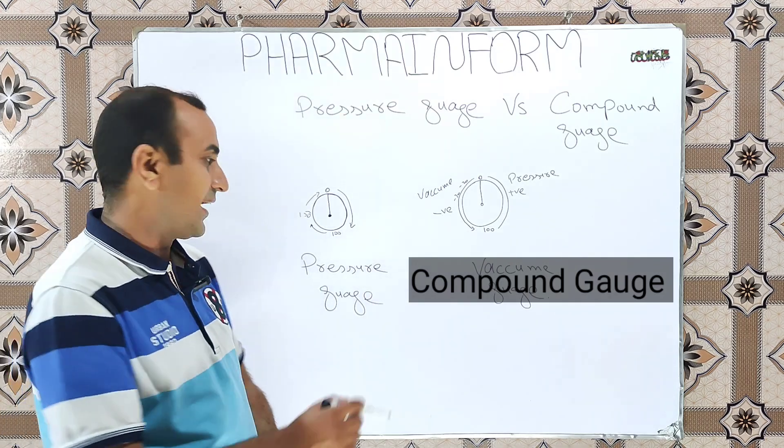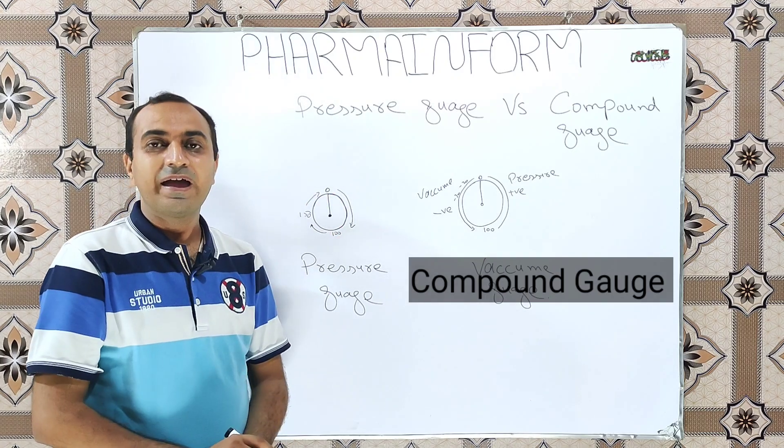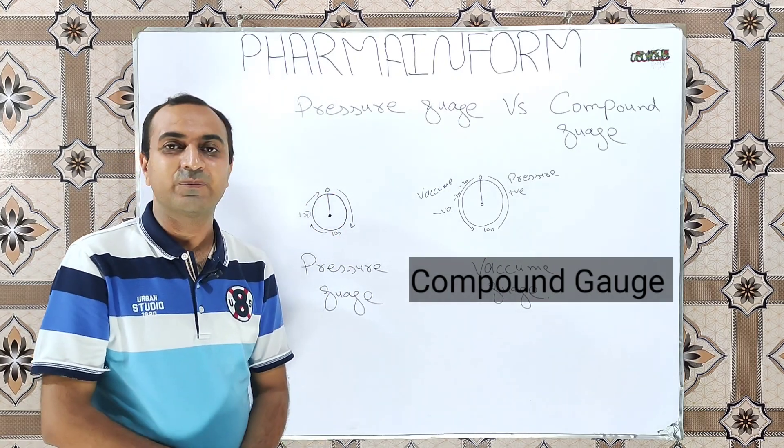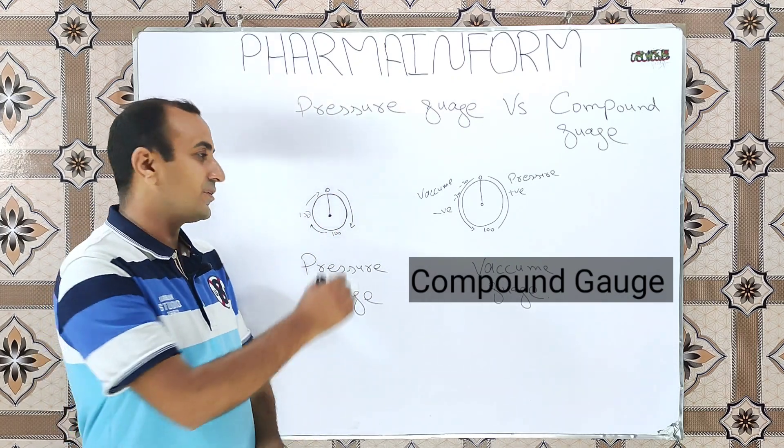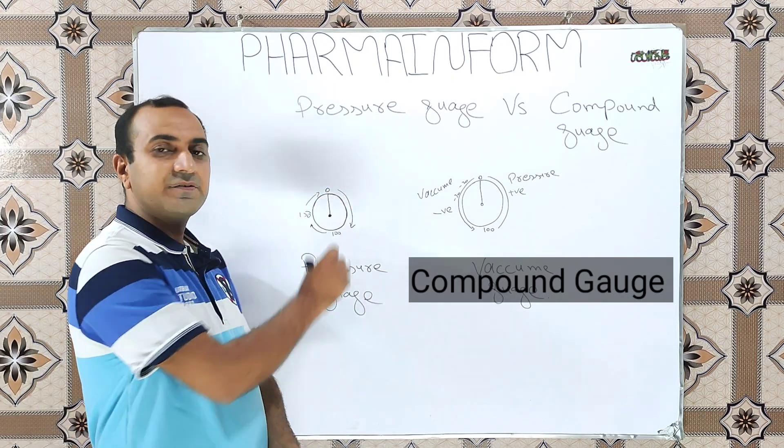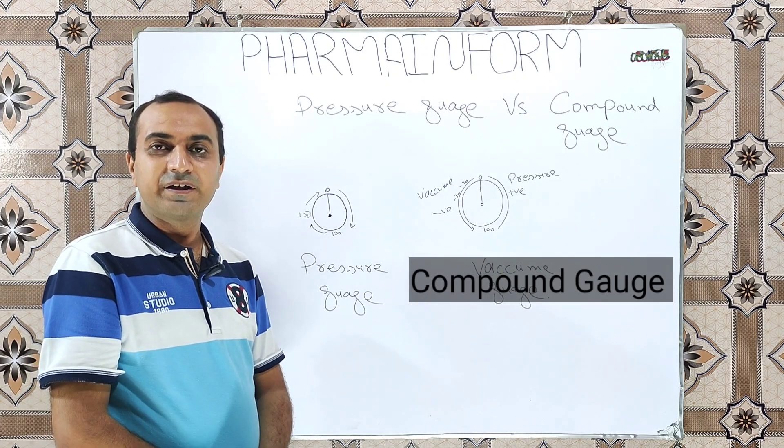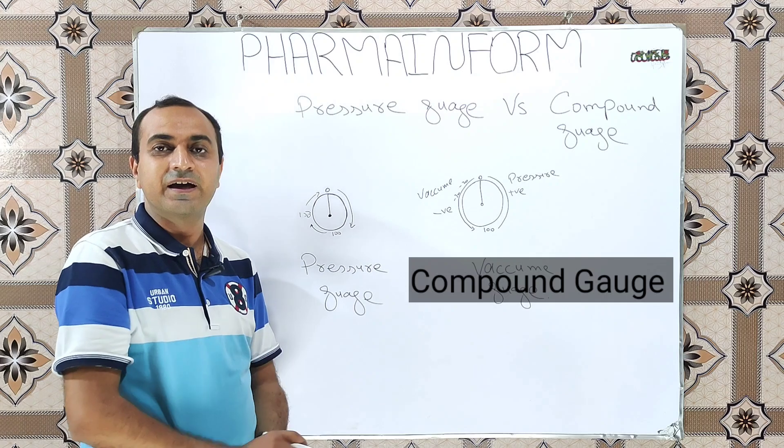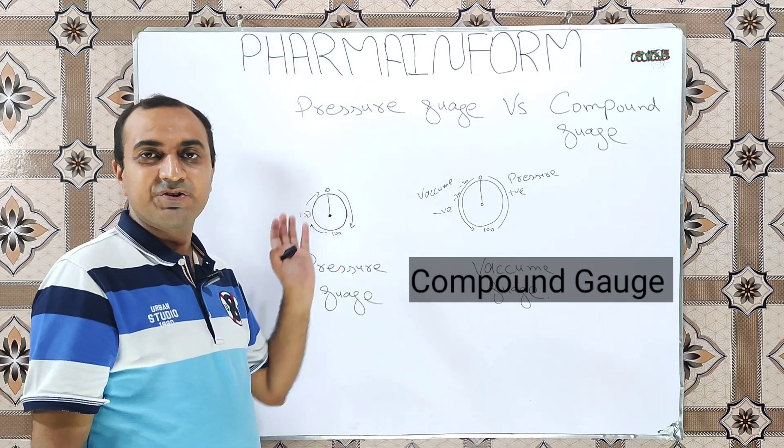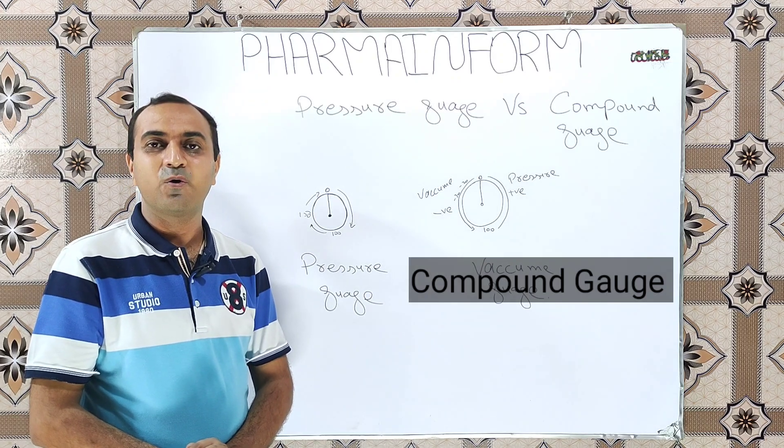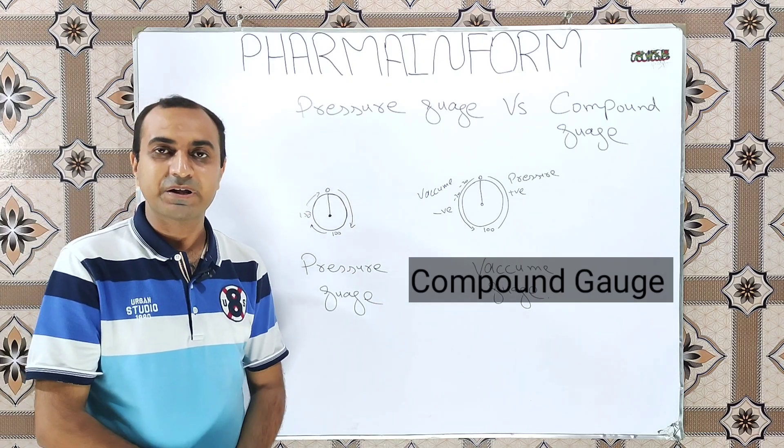This pressure gauge has simple reading values. It starts from zero and gives the positive values. At the atmospheric pressure value will be zero, and when we increase the pressure, the needle starts moving towards the higher upper values, 10, 20, 100, and this indicates the value of pressure. This is the function or purpose of the pressure gauge. A pressure gauge installed on the compressed air pipe will provide us the value of the pressure.